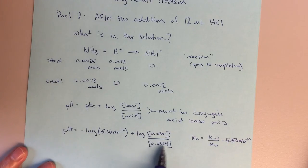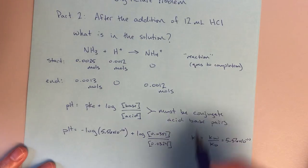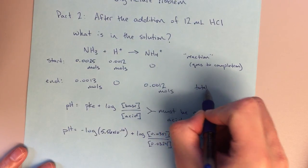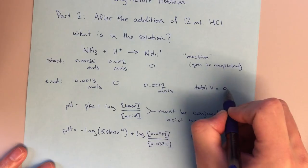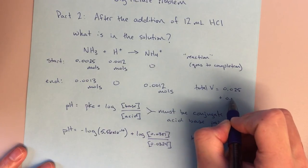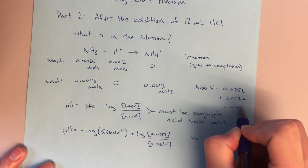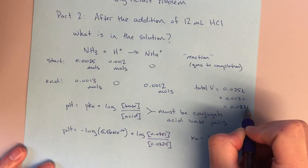So here I'm getting these values by taking the number of moles, dividing by the total volume. And the total volume in this case is 0.025 plus 0.012 liters equals 0.0137 liters.